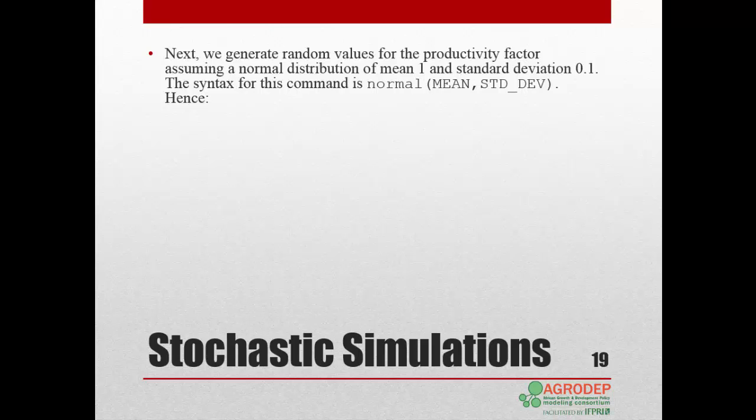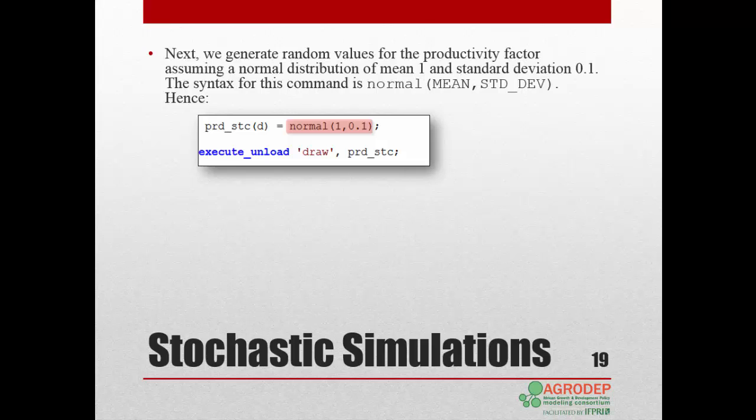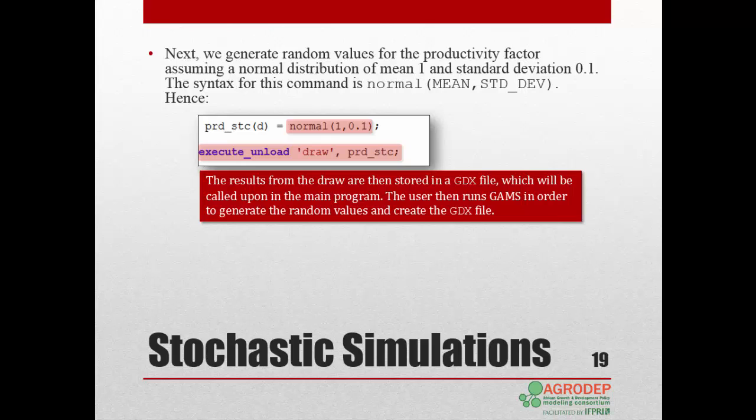Next, we generate random values for the productivity factor, assuming a normal distribution of mean 1 and standard deviation of 0.1. We store the results for prd_stc in a GDX file, which we will be able to call from the main program. The syntax is as follows: we use the execute unload statement, followed by the name of the file, draw, within quotes, followed by a comma and the parameter to store, prd_stc.